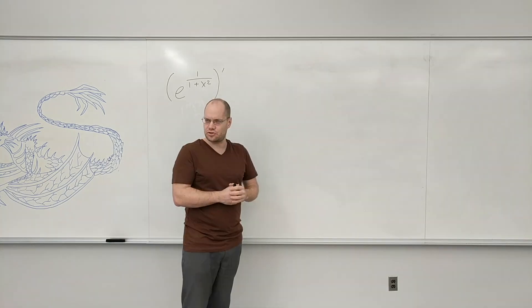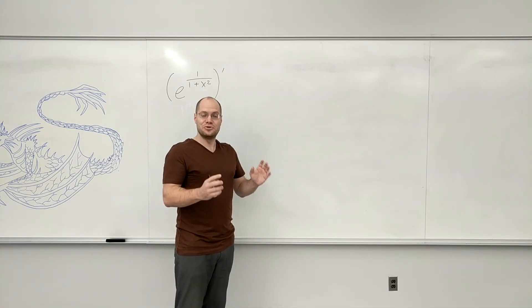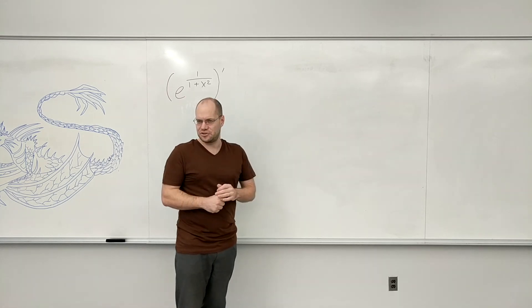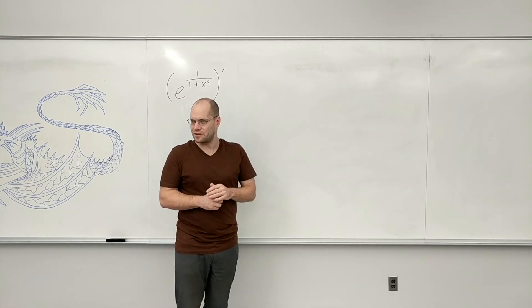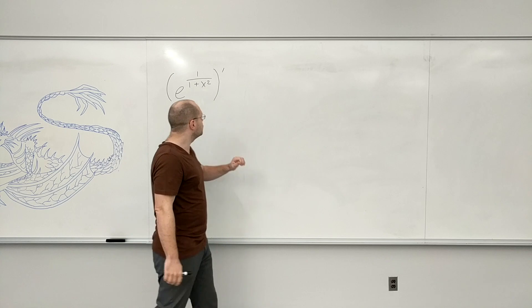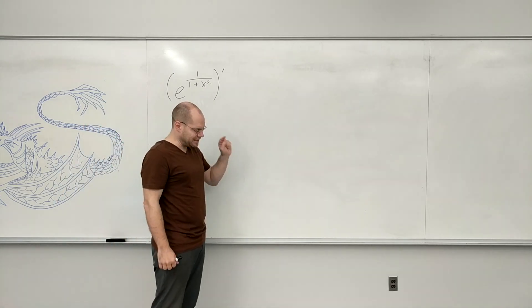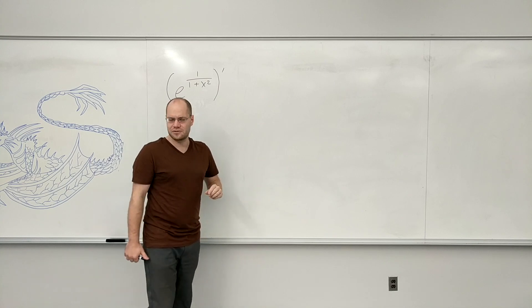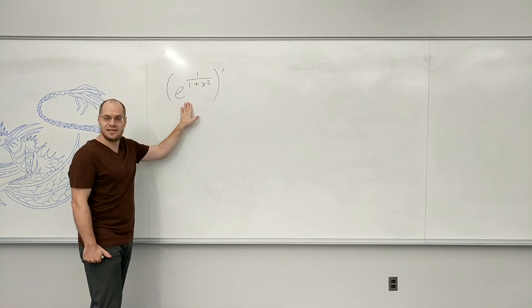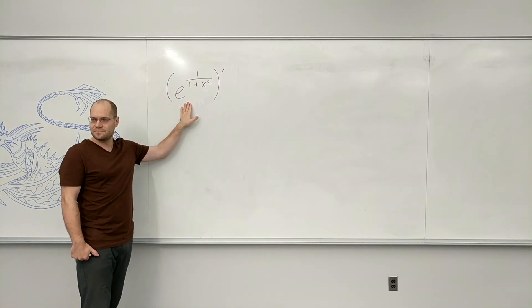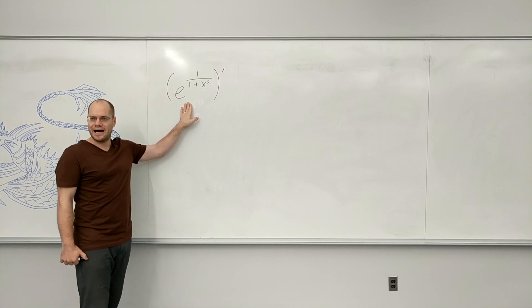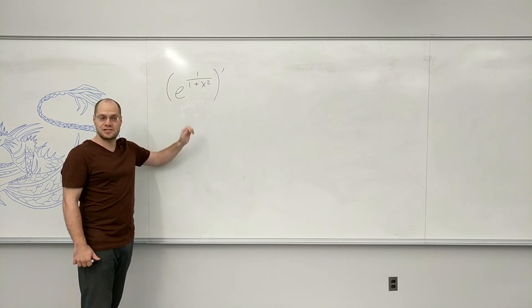When you apply the chain rule, you do the last thing first. You address the outermost structure first, and the key to doing it right is to say it to yourself. Language is so important when it comes to mathematics. You should be able to throw away all the details and get straight to the essence of the function you're looking at.